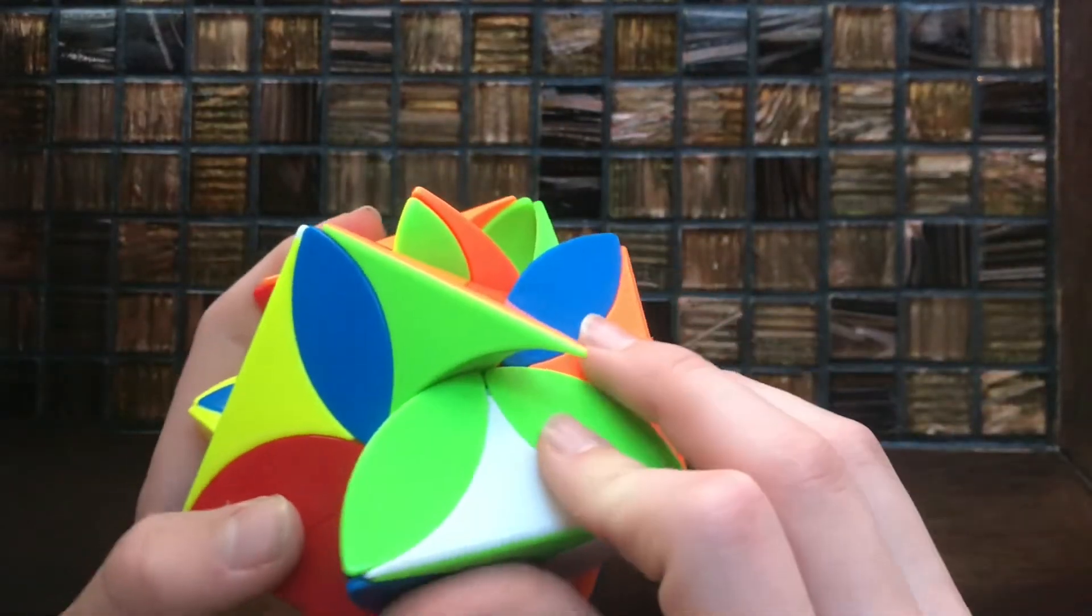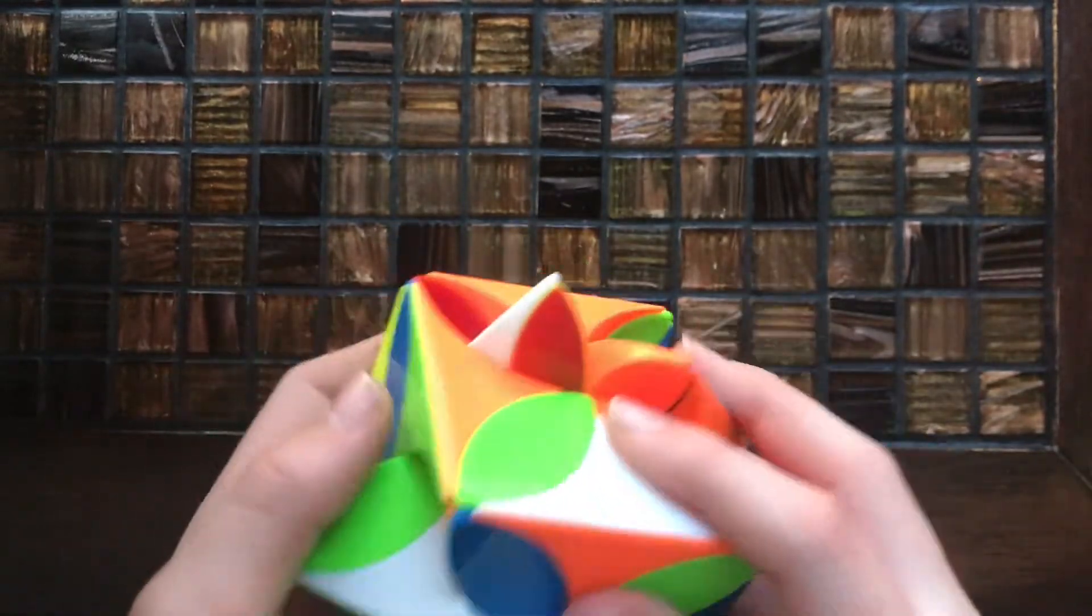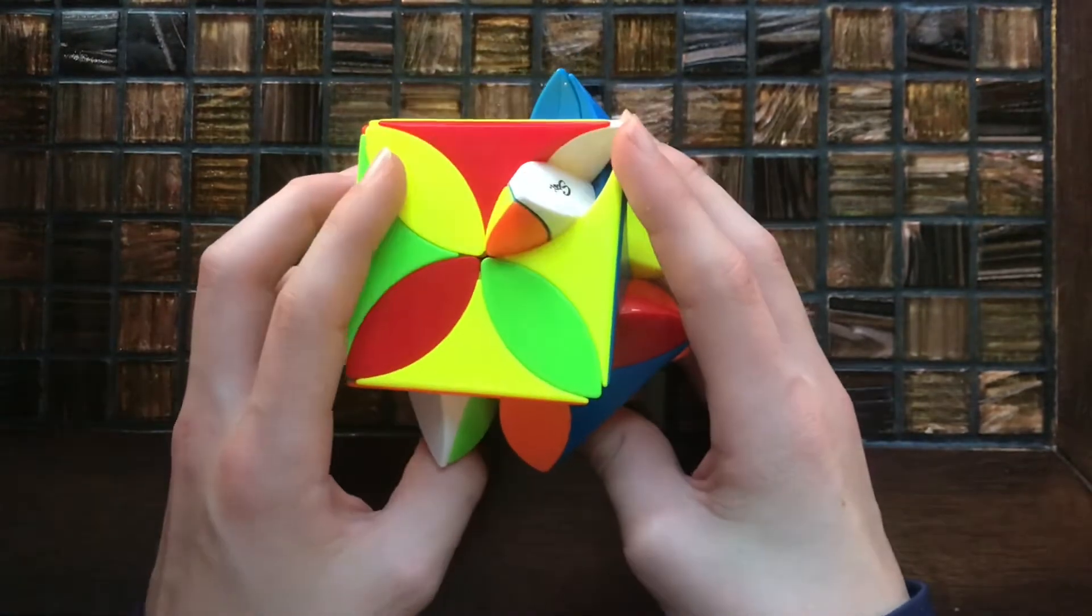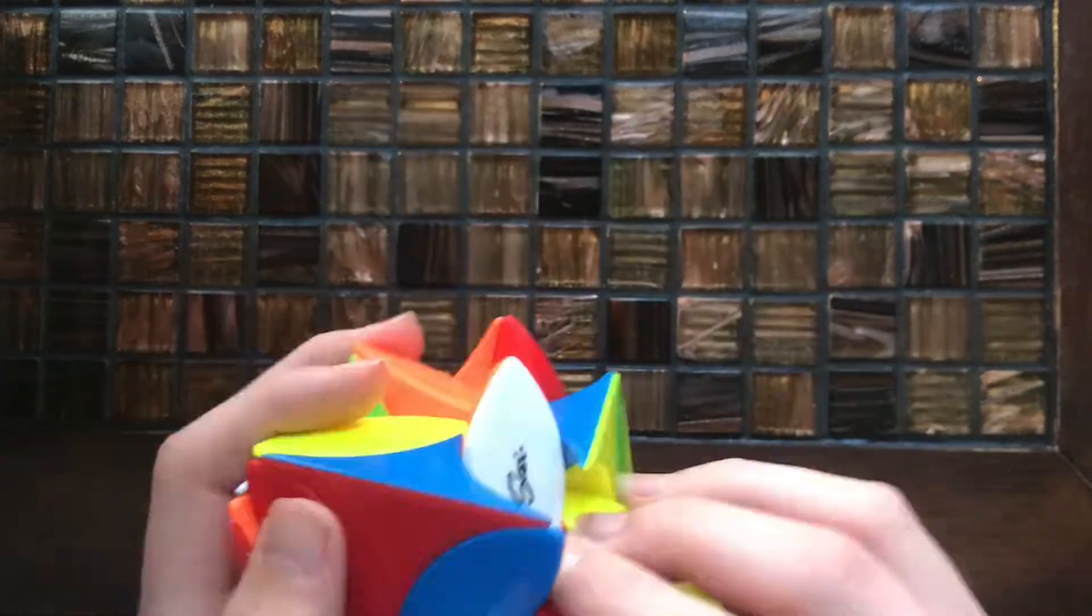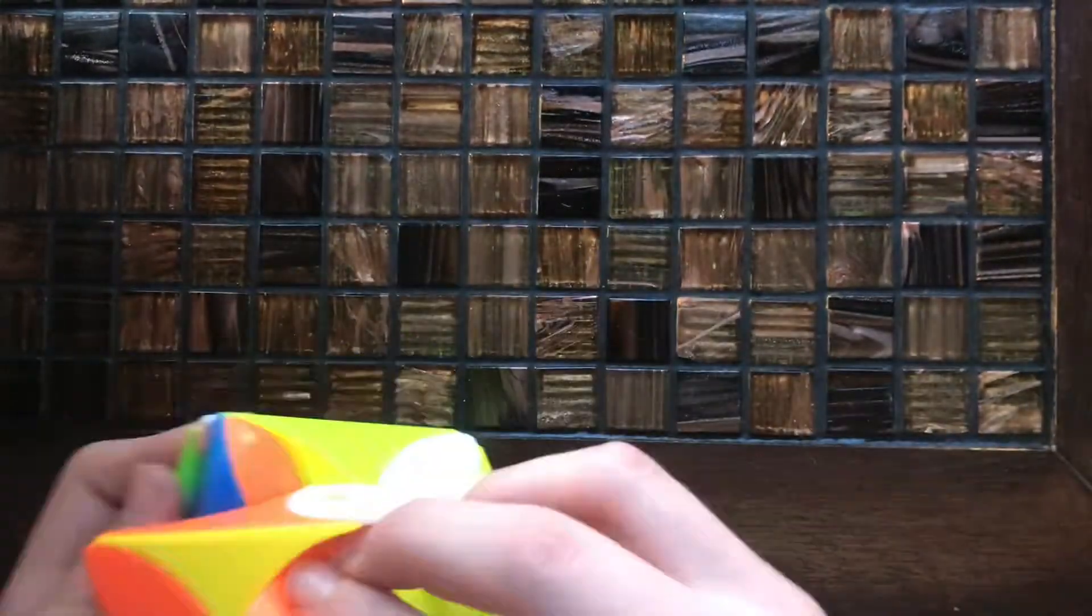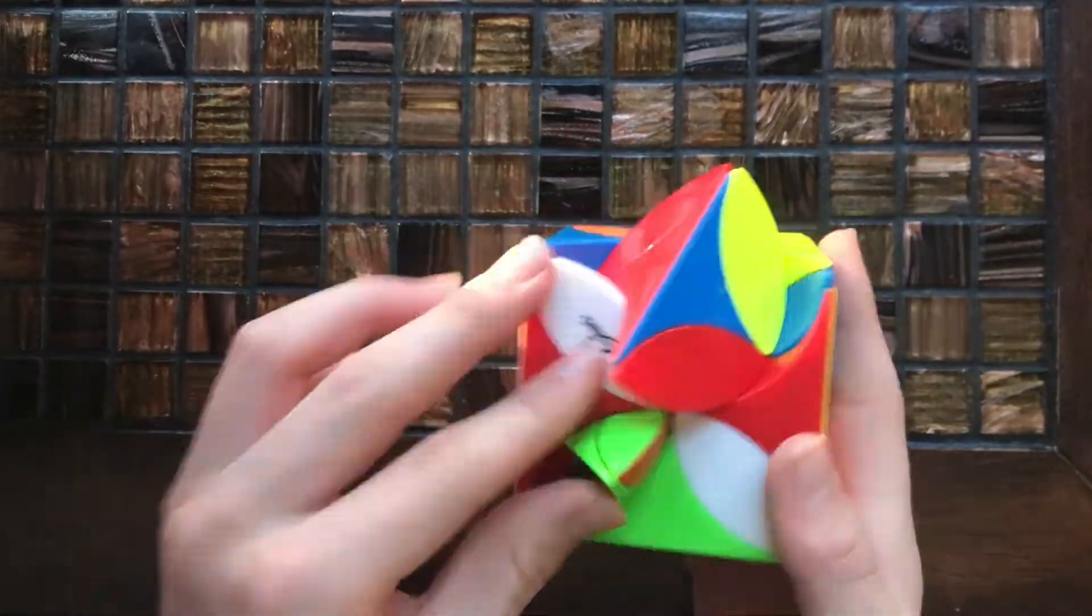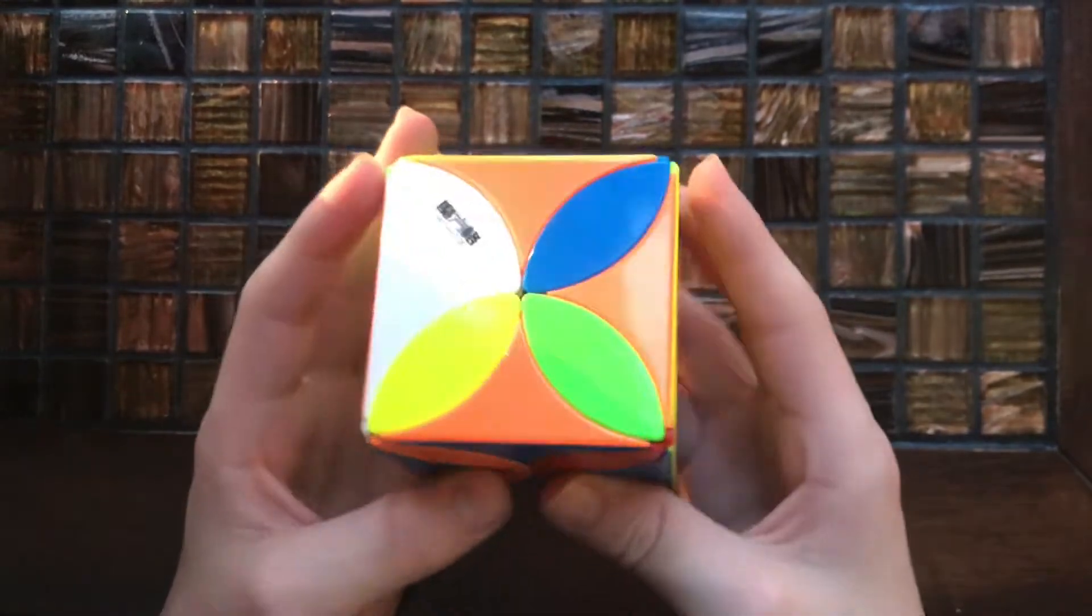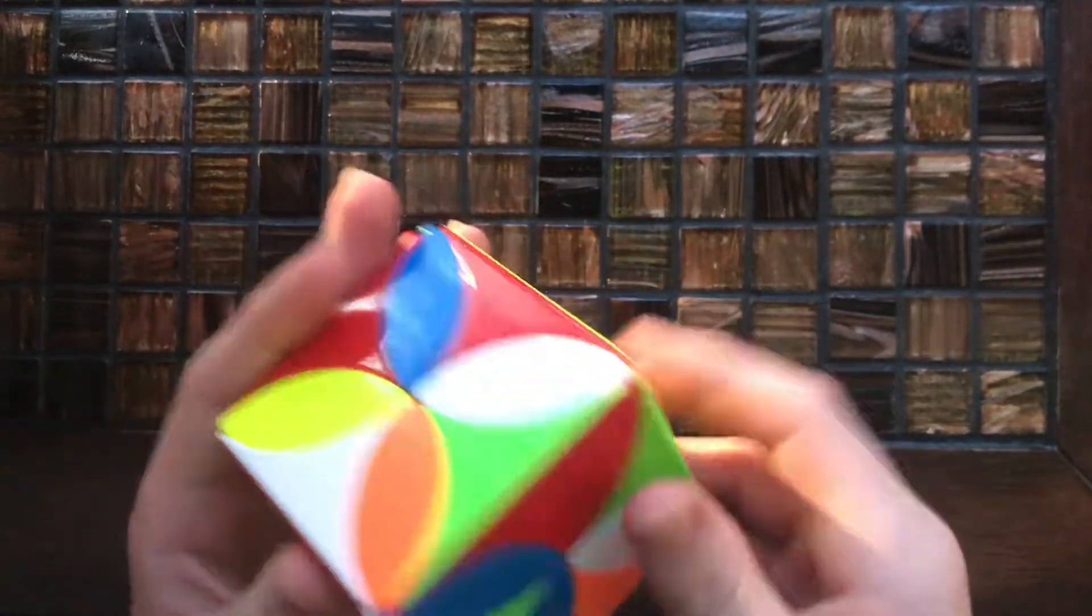Okay, I think that looks pretty scrambled. I don't really think I can scramble it a whole lot more. So I will just start the solve, I guess. All right, we got it back into a cube from that jumbled mess. So now let's just start getting some white pieces in.